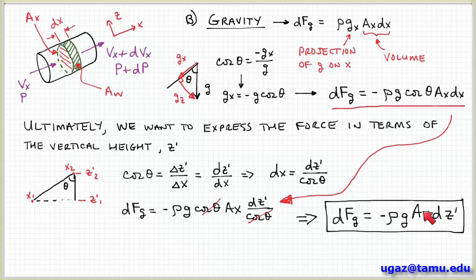And then I get an expression for the gravitational component of the force ρg times the cross-sectional area times dz prime. So this maps the gravitational force to a vertical distance rather than one that's with respect to this coordinate system relative to the pipe.